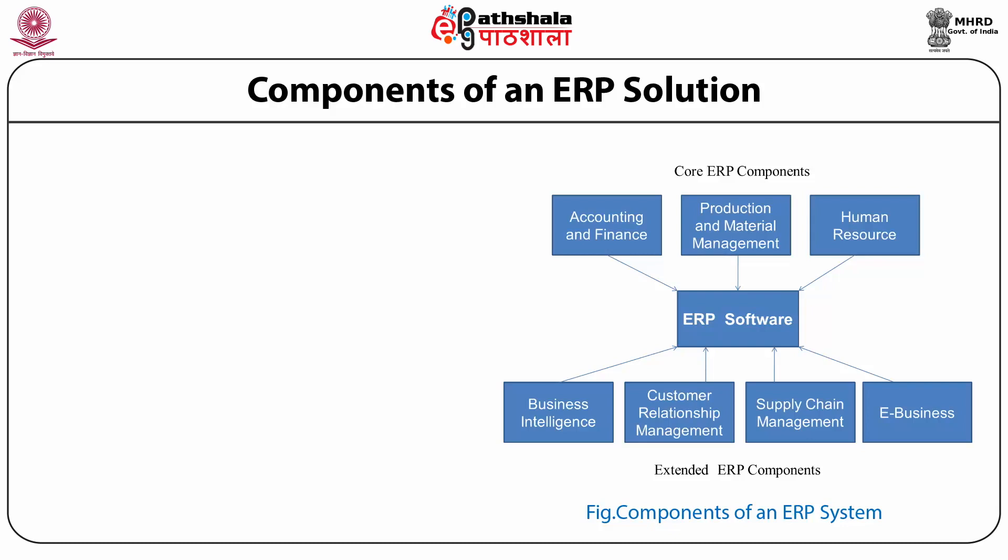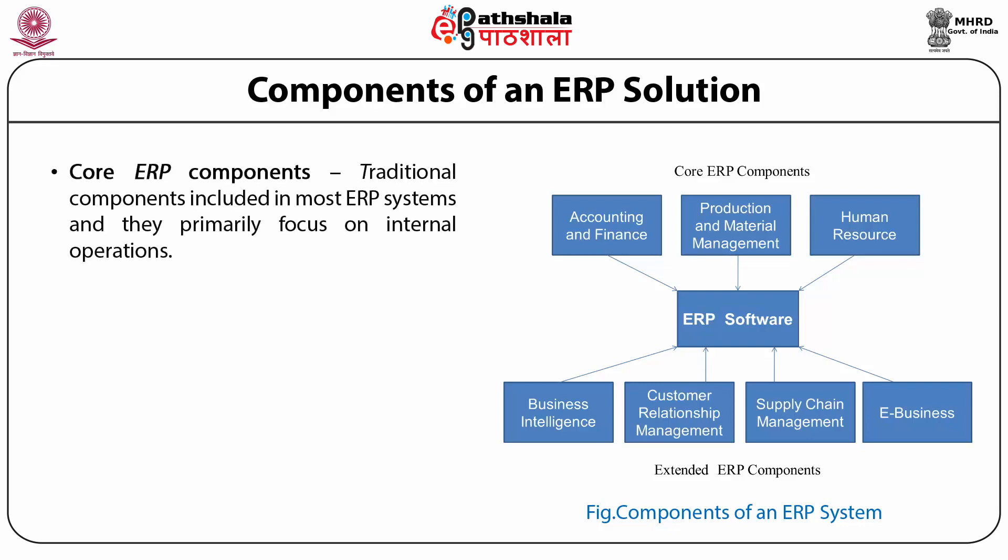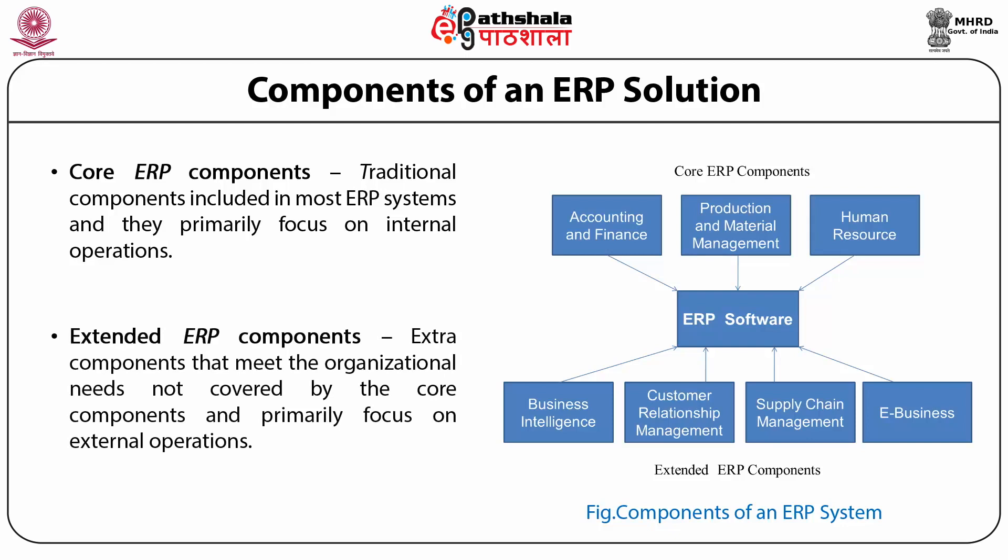Let us throw some light on the components of an enterprise resource planning solution. The first is the core ERP components, which are traditional components included in most ERP systems and primarily focus on internal operations. Extended ERP components are external components that meet organizational needs not covered by core components and primarily focus on external operations. The following diagram represents the various core and extended components of an ERP solution.